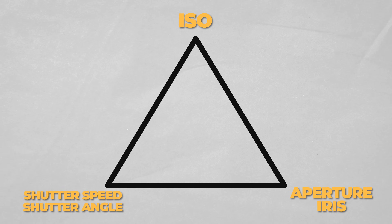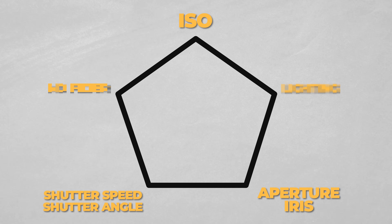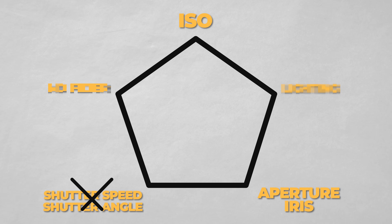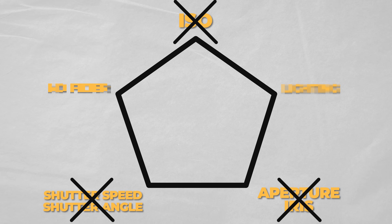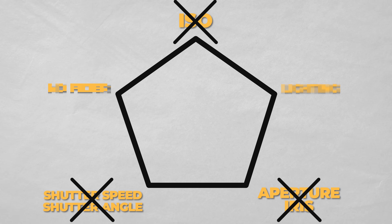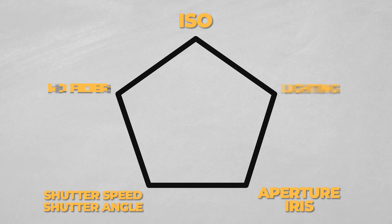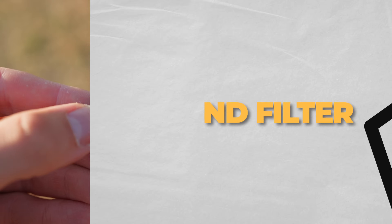But I promised I would turn the exposure triangle into an exposure pentagon, so we need to add two more points. So let's pretend that we're absolutely not willing to compromise our three exposure settings. What do we do if things are too bright? That's where ND filters come in.